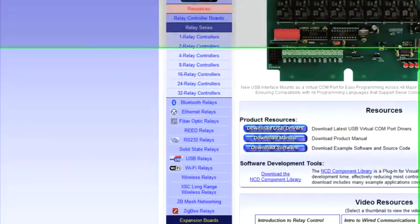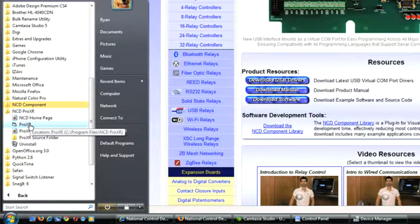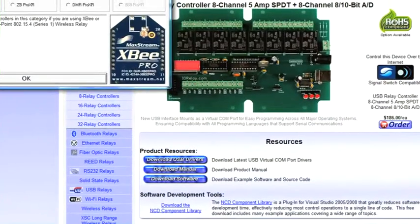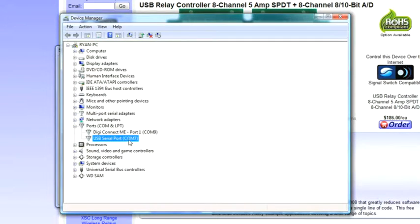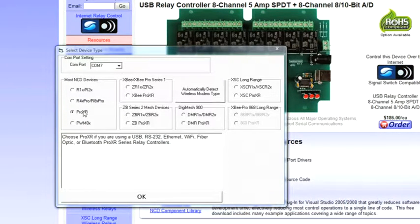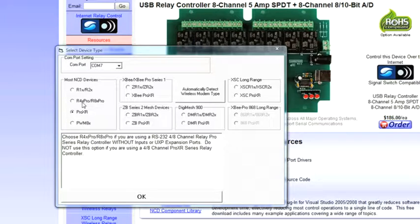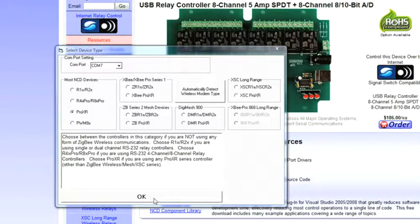Now what you'll want to do is go down to your Start menu, All Programs, NCD Pro XR, and open the Pro XR application. And you'll want to choose the COM port that your USB relay controller is attached to. It'll be listed right next to it on the Device Manager. And then you'll want to select Pro XR if you have a Pro XR controller, or R4 or R8 if you have a 4 or 8 channel relay controller that is not Pro XR, or R1 slash R2 if you have a 1 or 2 channel relay controller. Select OK.